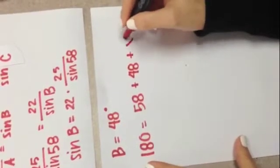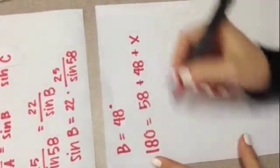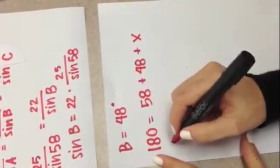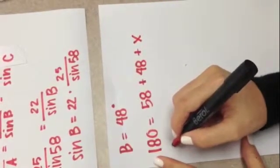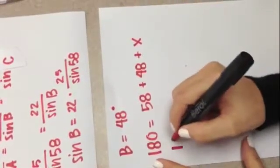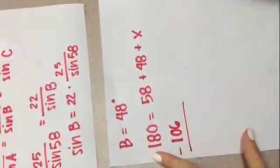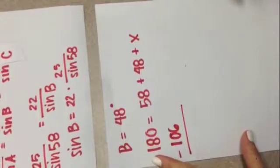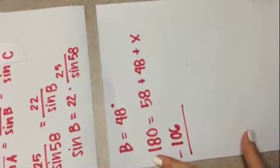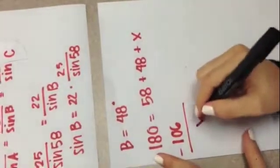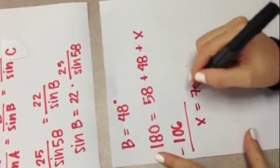What we are missing is our third angle. So, if we work this out, 58 plus 48 equals 106. Our missing angle is 74 degrees.